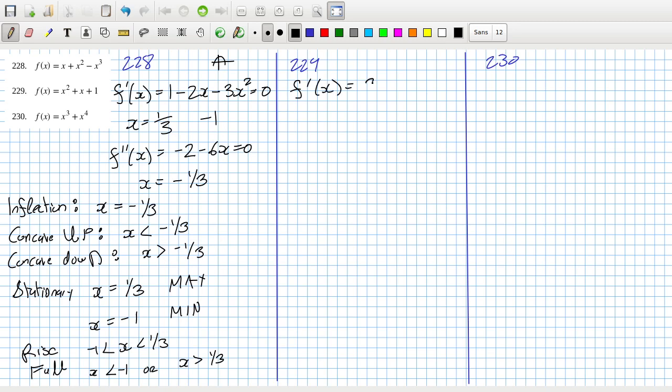The first derivative is 2x plus 1 equals 0, and then the second derivative will be just a constant 2. So you can see that it's always concave up.